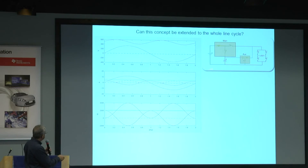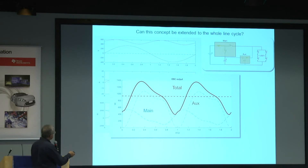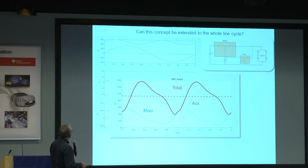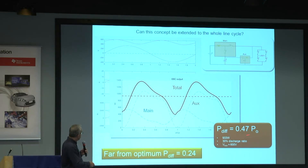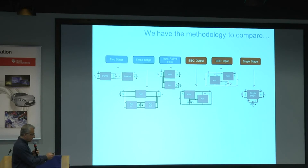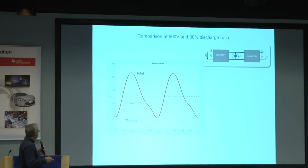We plotted the external waveforms and then plotted the power processed by each component — not the nominal output power but the differential power processed by the components. We got values for the main converter, the auxiliary converter, and the total was 0.47, meaning we were processing around 900 W. Was it good or bad? It was, in any case, far from the minimum possible. So we proposed another architecture similar to that one and compared it with typical approaches: two-stage, filter, three-stage. We also tried a single-stage converter, made the comparison, and this is what we got.